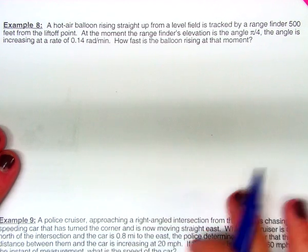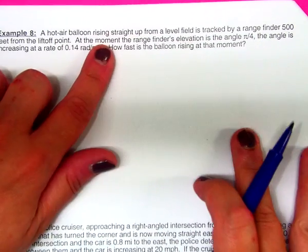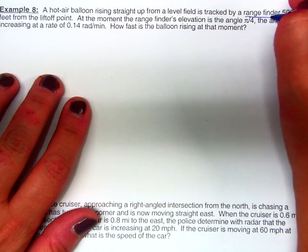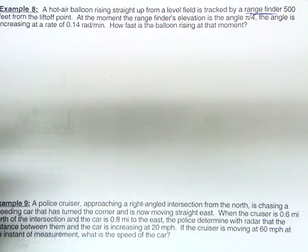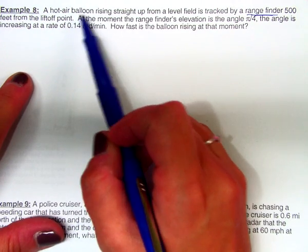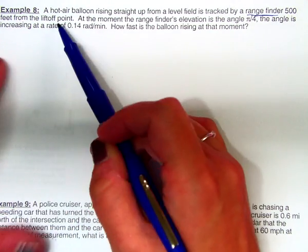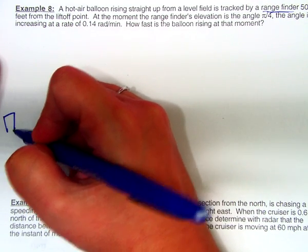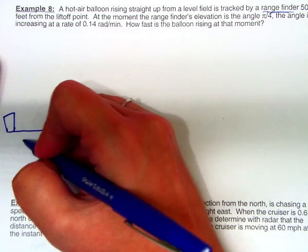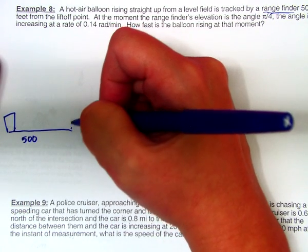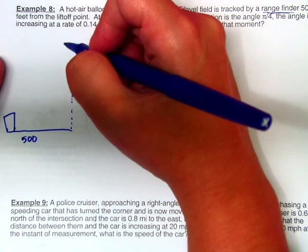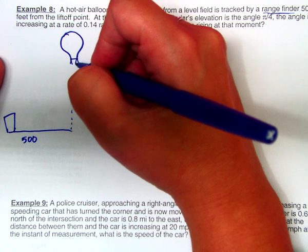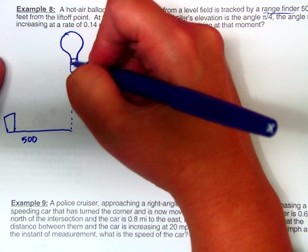So example 8 is kind of fun. We've got a hot air balloon rising straight up from a level field, and it's being tracked by a range finder. That's just like an electronic device that kind of measures where and how high up the hot air balloon is. That finder is 500 feet from liftoff. So I envision this - I don't know what a range finder looks like. Let's say it's just in this little building. But I do know that that is 500 feet from my hot air balloon, which is hopefully just rising vertically as a hot air balloon should.